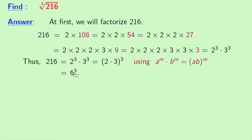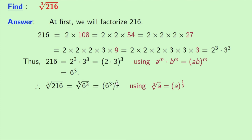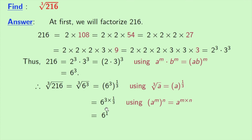So we get 216 is equal to 6 power 3. Now we will take cube root on both sides. Taking that, we get cube root of 216 is equal to cube root of 6 cube, which can be written as 6 power 3 whole power 1 by 3, as cube root can be written as power 1 by 3. Now we rewrite it as 6 power 3 times 1 by 3, as a power m power n is equal to a power m times n, where a is 6, m is 3 and n is 1 by 3. In the power, 3 gets cancelled and we have 6 power 1, that means 6, and this is our final answer.